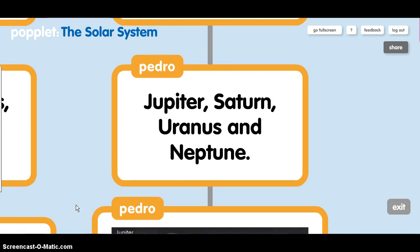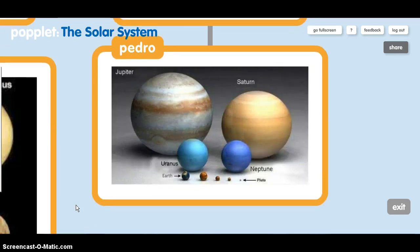Jupiter, Saturn, Uranus, and Neptune. These are gas giant planets.